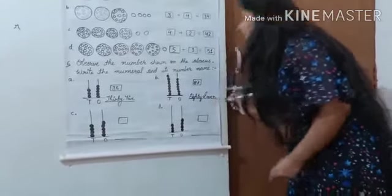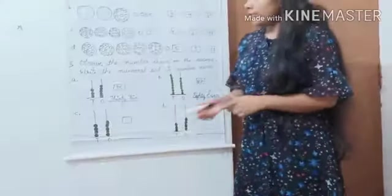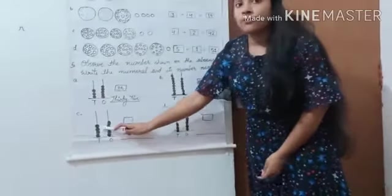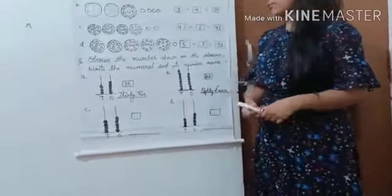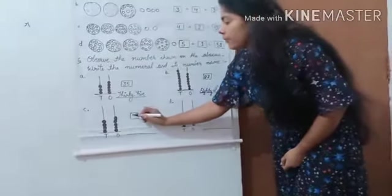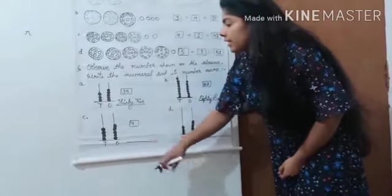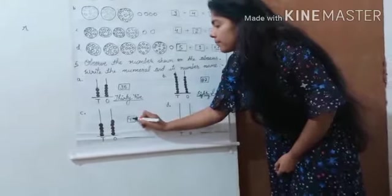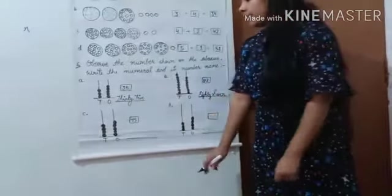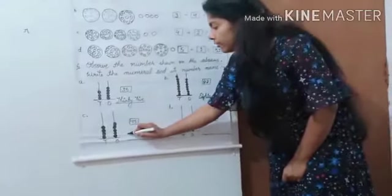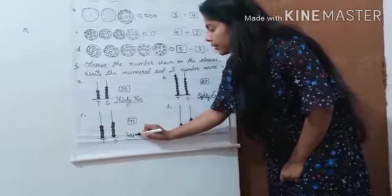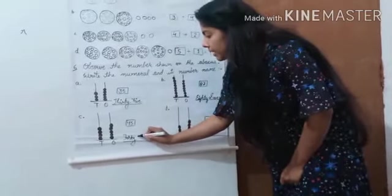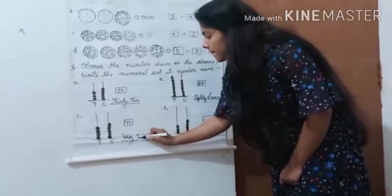Very good. See, we have 1, 2, 3, 4. 4 beads on tens space and 1, 2, 3, 4, 5. 5 beads on ones space. We have 4 beads on tens space and 5 beads on ones space. We have the number 45. Write 45. 45 is 40 and 5.